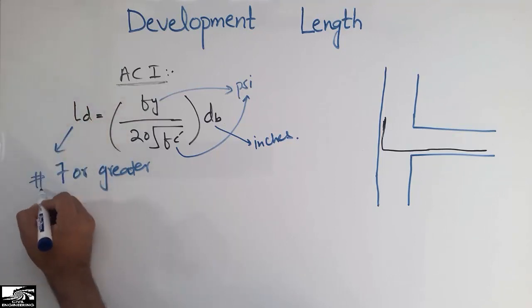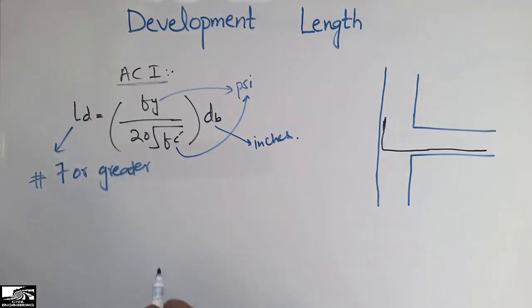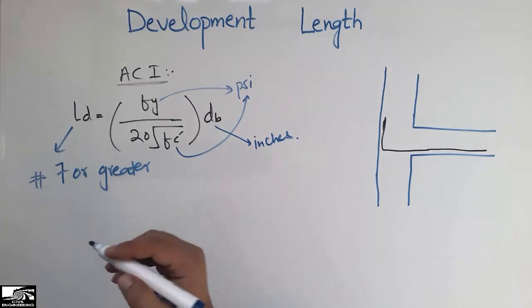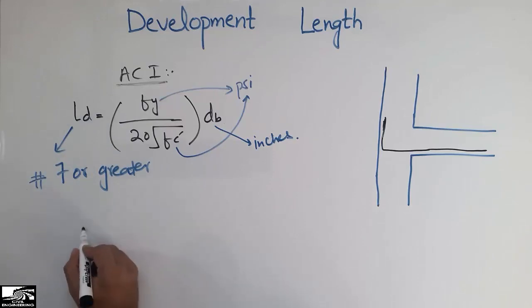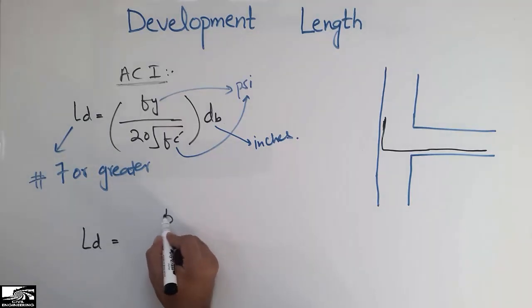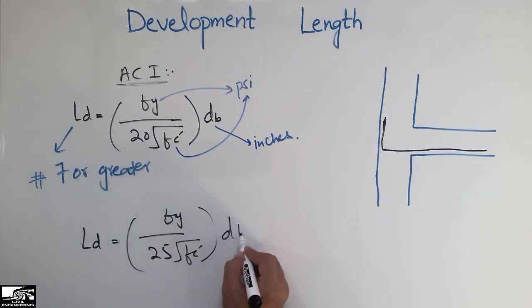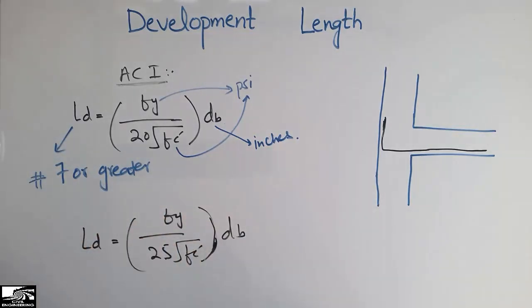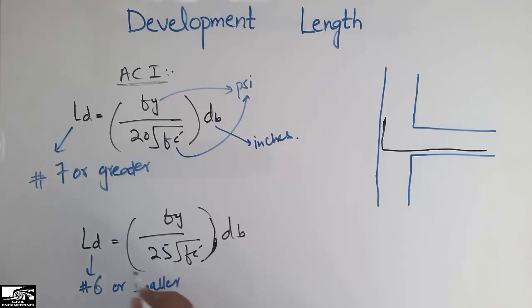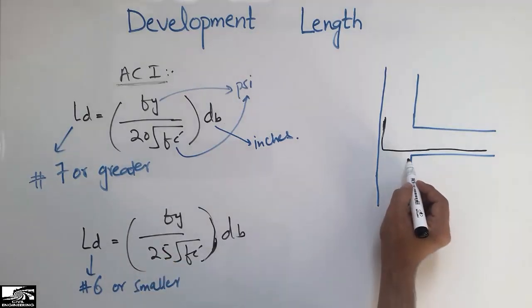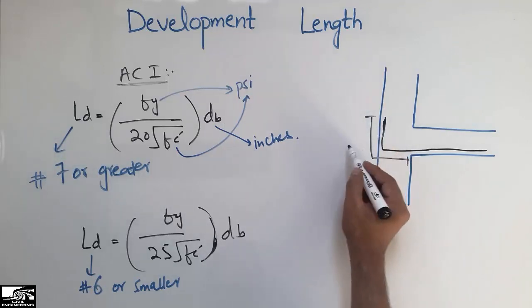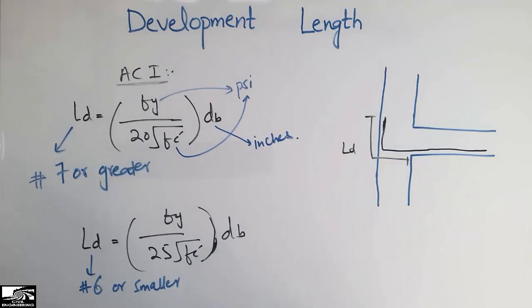For number 6 bars or smaller, the development length equation is modified: we use 25 instead of 20, so LD equals Fy divided by 25, divided by the square root of Fc', multiplied by db. The rest of the formula is the same. The first equation is for number 7 or greater bars, and this modified equation is for number 6 or smaller bars.